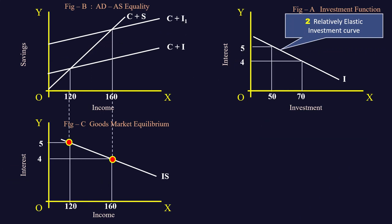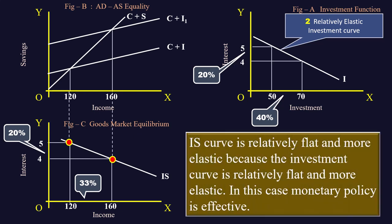Case 2: Relatively elastic investment curve. In this case, a 20% fall in interest rate causes investment to increase by 40%. This 20% fall in interest in turn increases the income by 33%. IS curve is relatively flat and more elastic because investment curve is relatively flat and more elastic. In this case, monetary policy is effective.